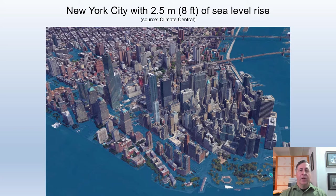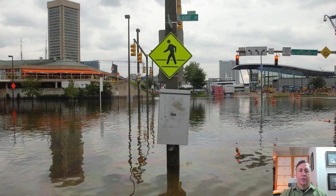And here's what New York City could look like with 2.5 meters of sea level rise. And here's what Baltimore could look like.